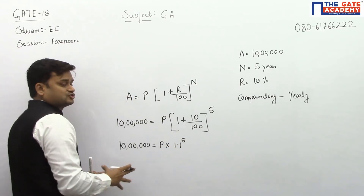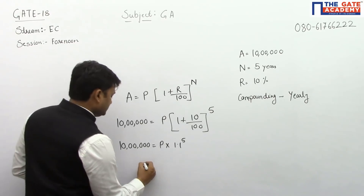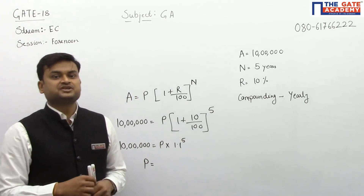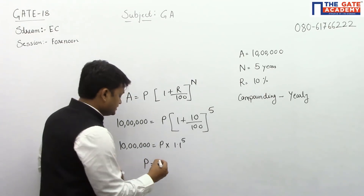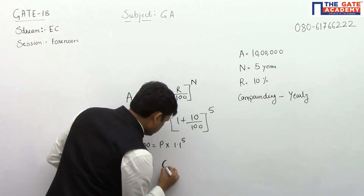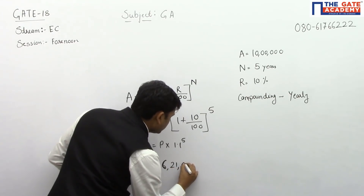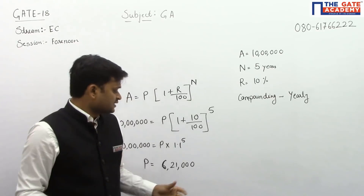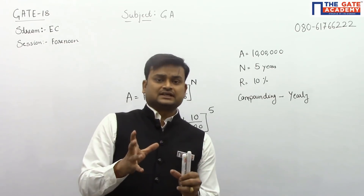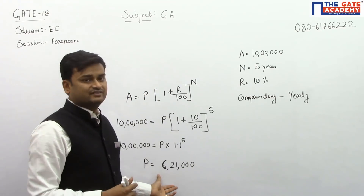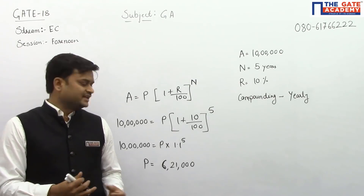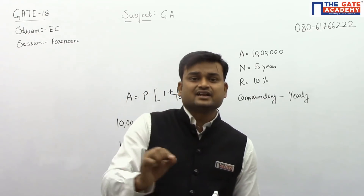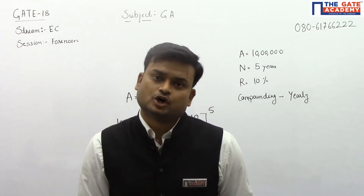After solving this with a calculator, you'll get an answer near one of the given options, which is six lakh twenty-one thousand. The answer is not exactly six lakh twenty-one thousand, but very close to it, so we take the nearest available option.